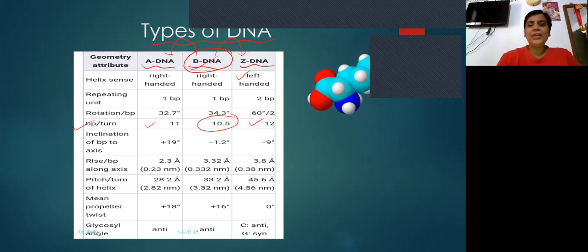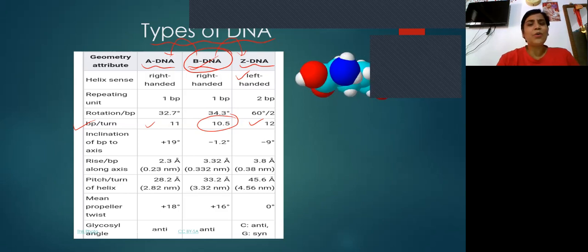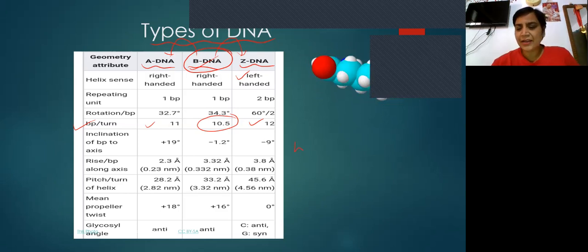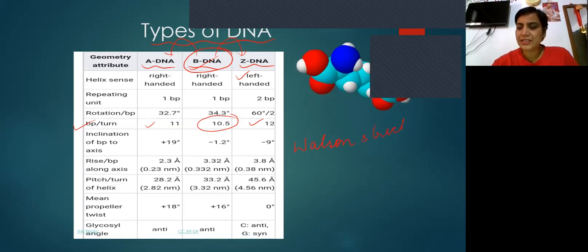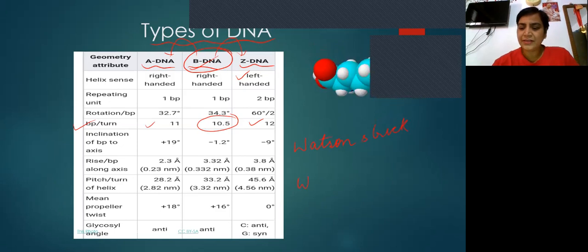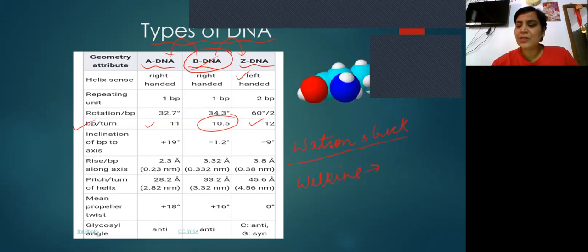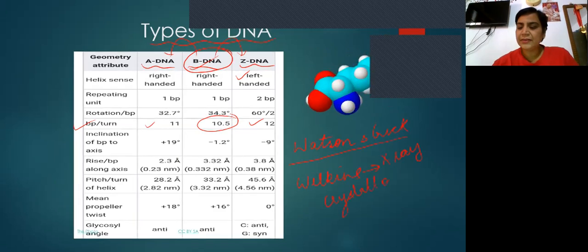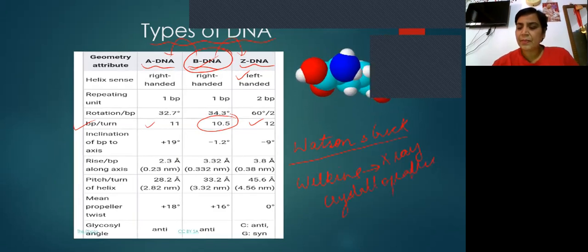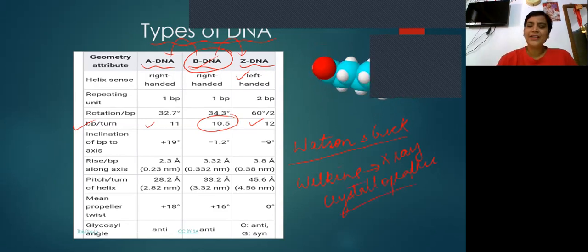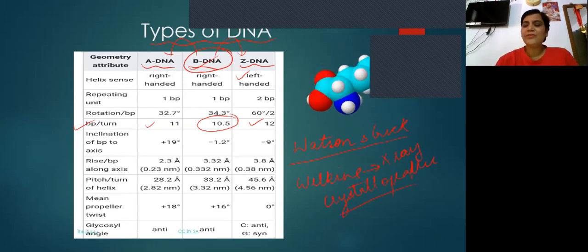The structure of B-DNA was given by two very important scientists, Watson and Crick — actually three scientists: Watson, Crick, and Wilkins. They were awarded the Nobel Prize in 1972. Watson and Crick gave the major postulates, and Wilkins was the one who provided the X-ray crystallographic structure of DNA. Ideally, the Nobel Prize had to be shared among all three of them.